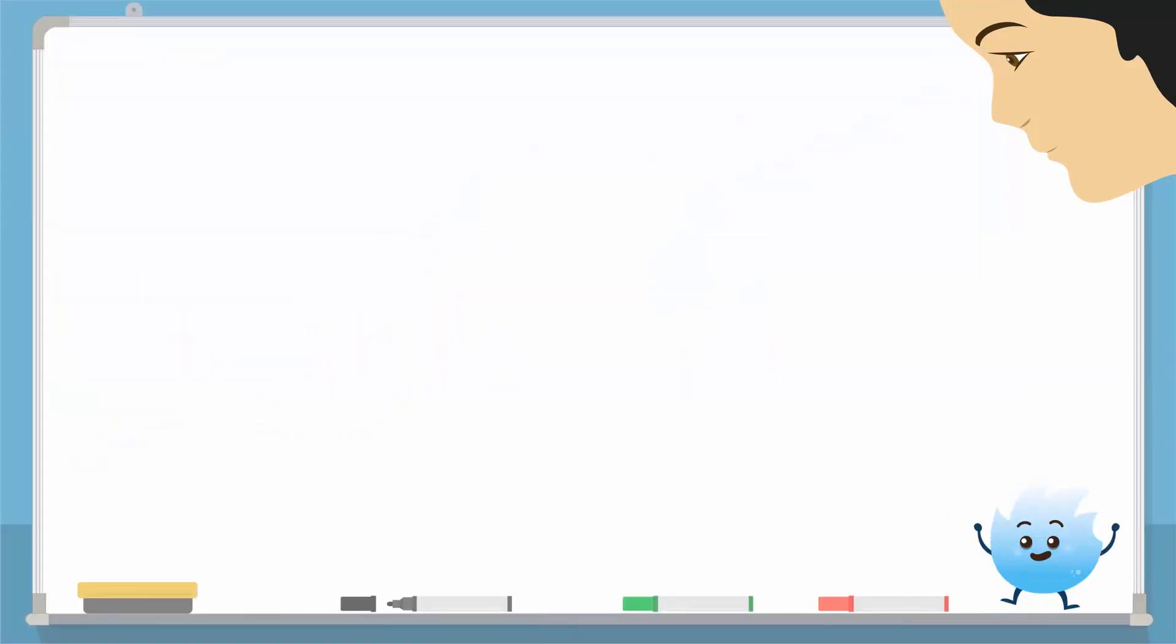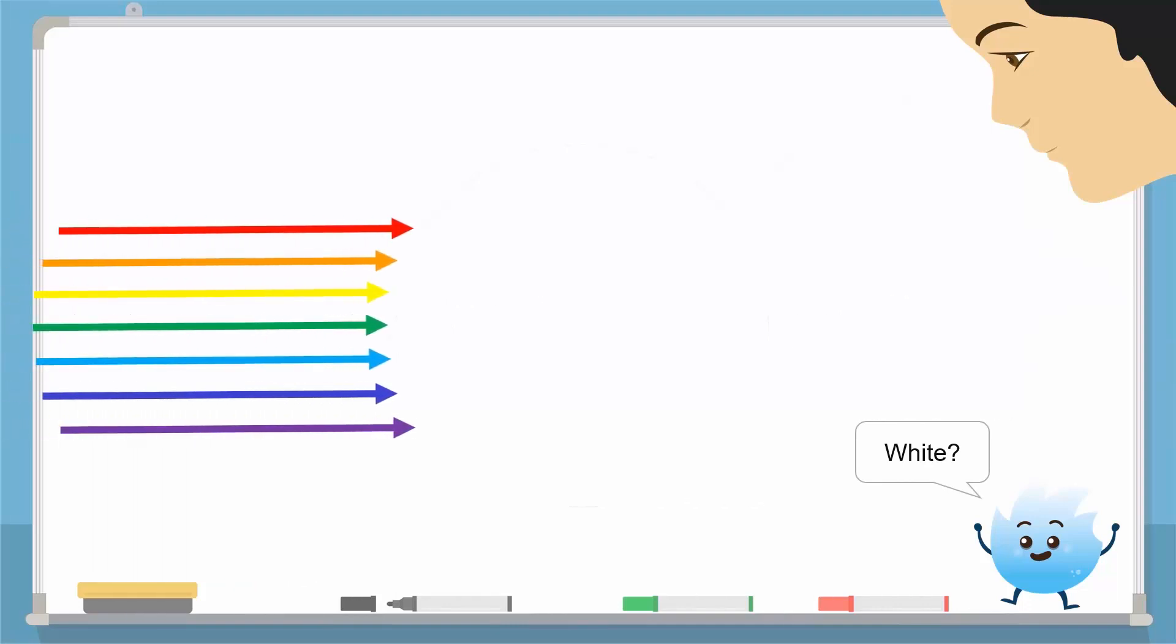Now what do you suppose happens if all the colors were reflected? What would we see then? White. The color white appears when all colors of the spectrum are reflected.